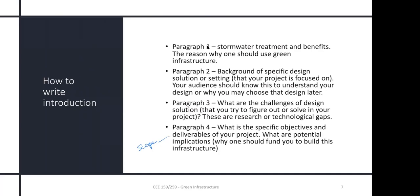The third paragraph is about challenges — why should someone invest money in this? For a school project you might say finding space is challenging because parking is essential, so system-level thinking is required. Highlight the specific things you are doing and why they are important. For a research paper this is the research gap; for a review paper, this explains what needs to be done and why. That way, when you write the objective, readers understand why it matters because you've already set it up.